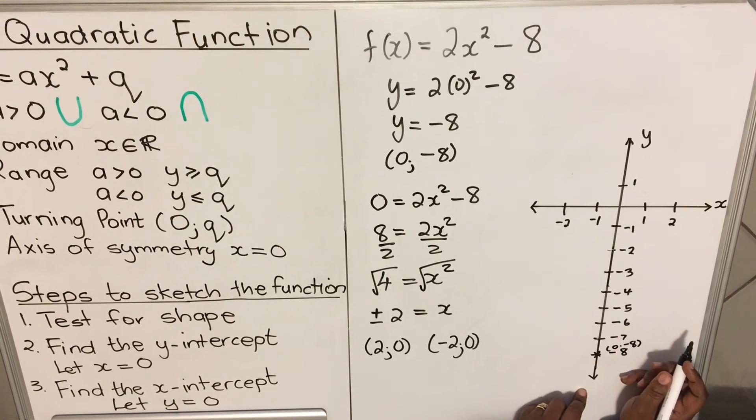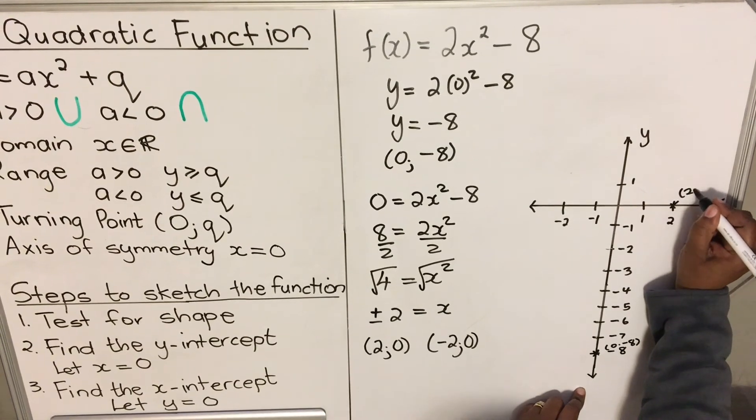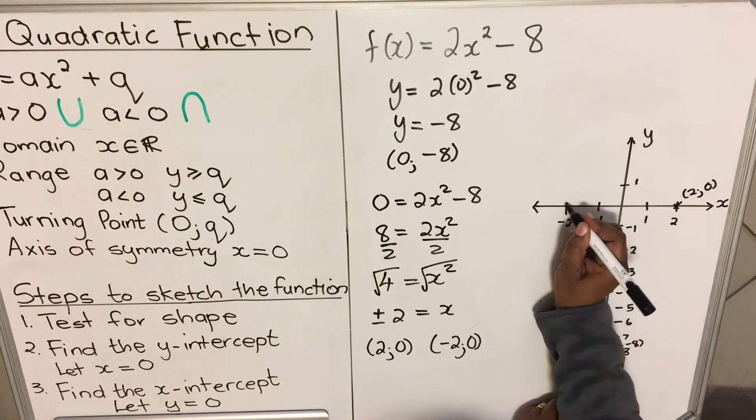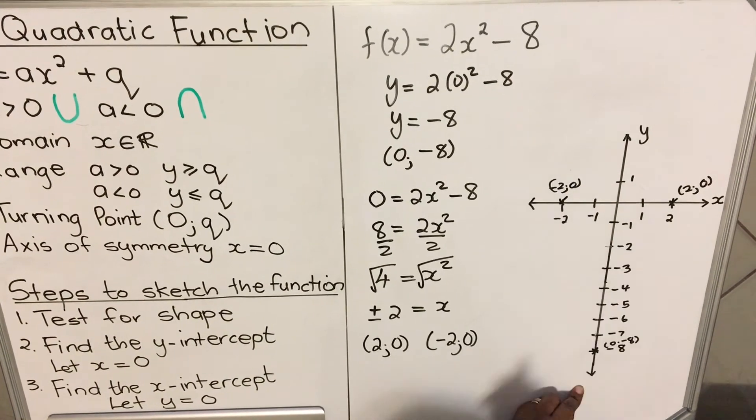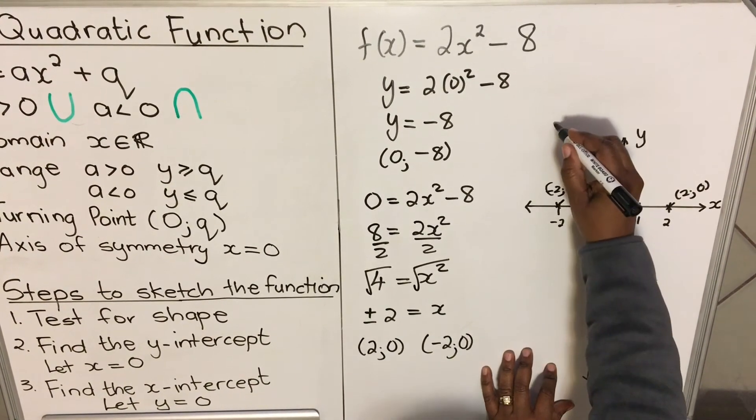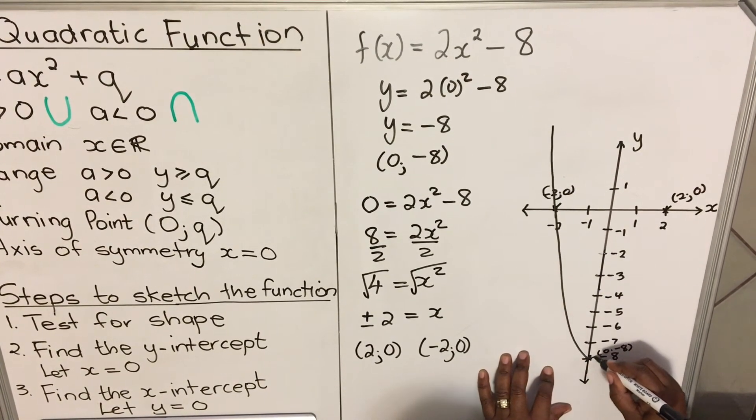And then my x-intercept is (2, 0) and the other one is (-2, 0). Then draw your graph. Your graph must be in this shape—it's a curve. It's not a straight line. You use your free hand to draw it like that.